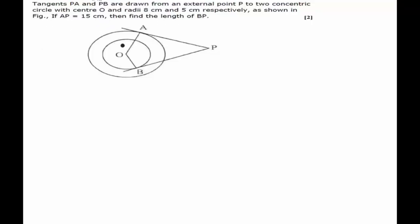The outer one has the radius equal to 8 cm and the inner one has the radius equal to 5 cm. AP is also given which happens to be 15 cm. We have to find out the length of BP.